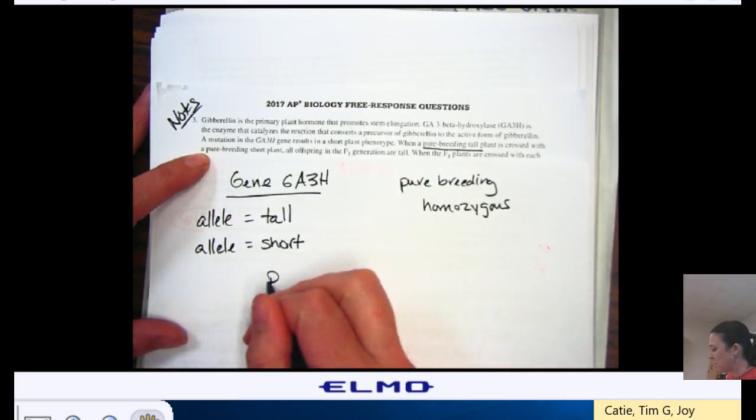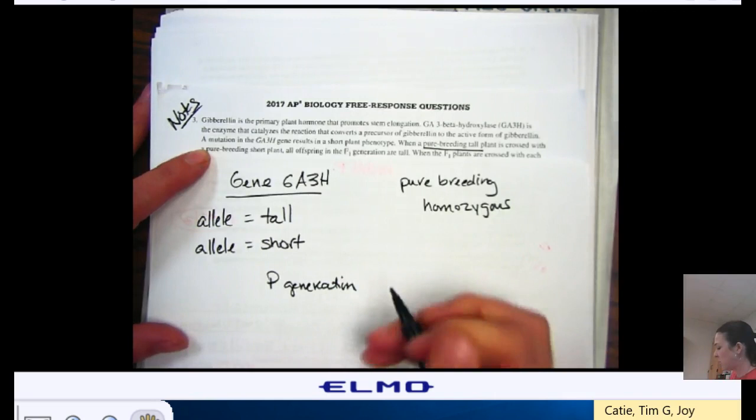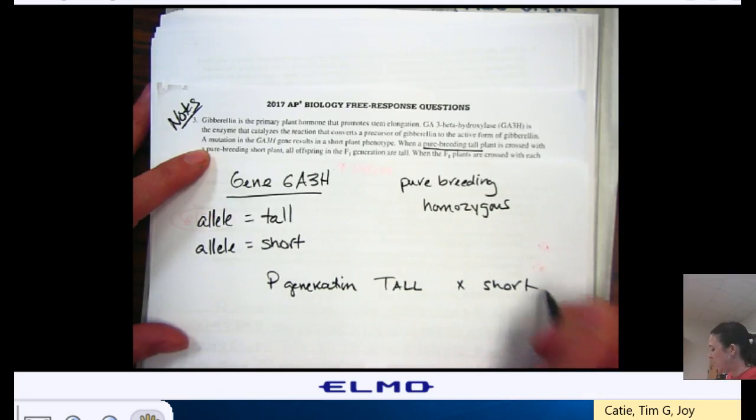So that means, here's my P generation, that's my parent or my true breeding generation. And I have one that's tall, crossed with one that is short. And I get in my F1, they're all tall.